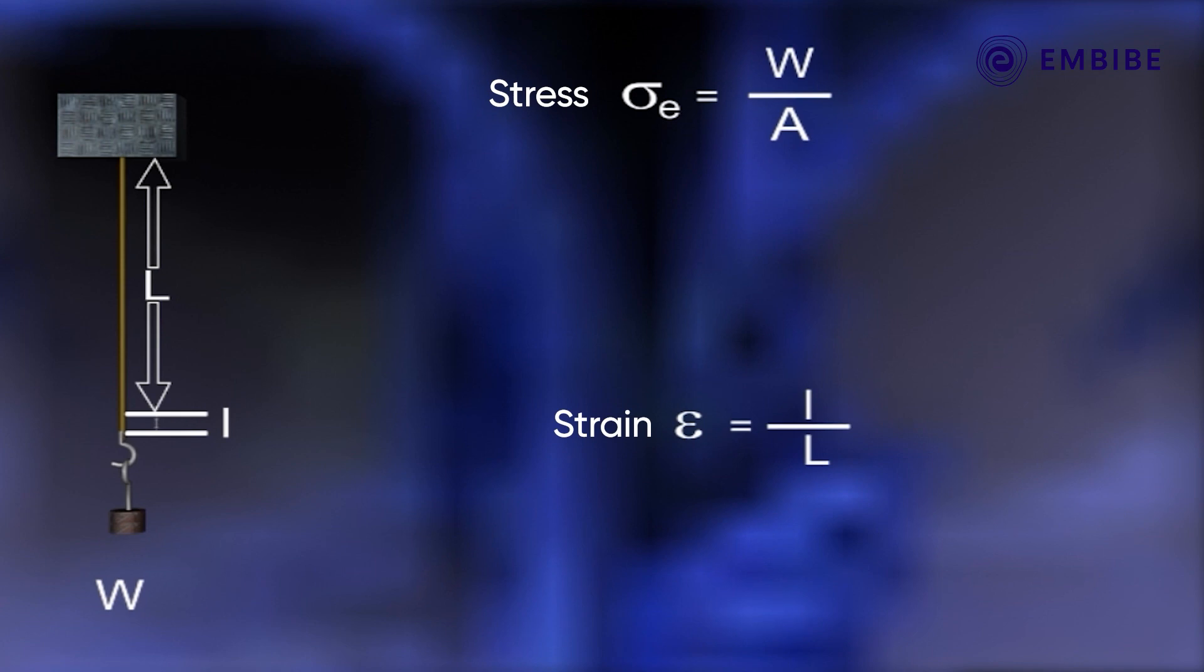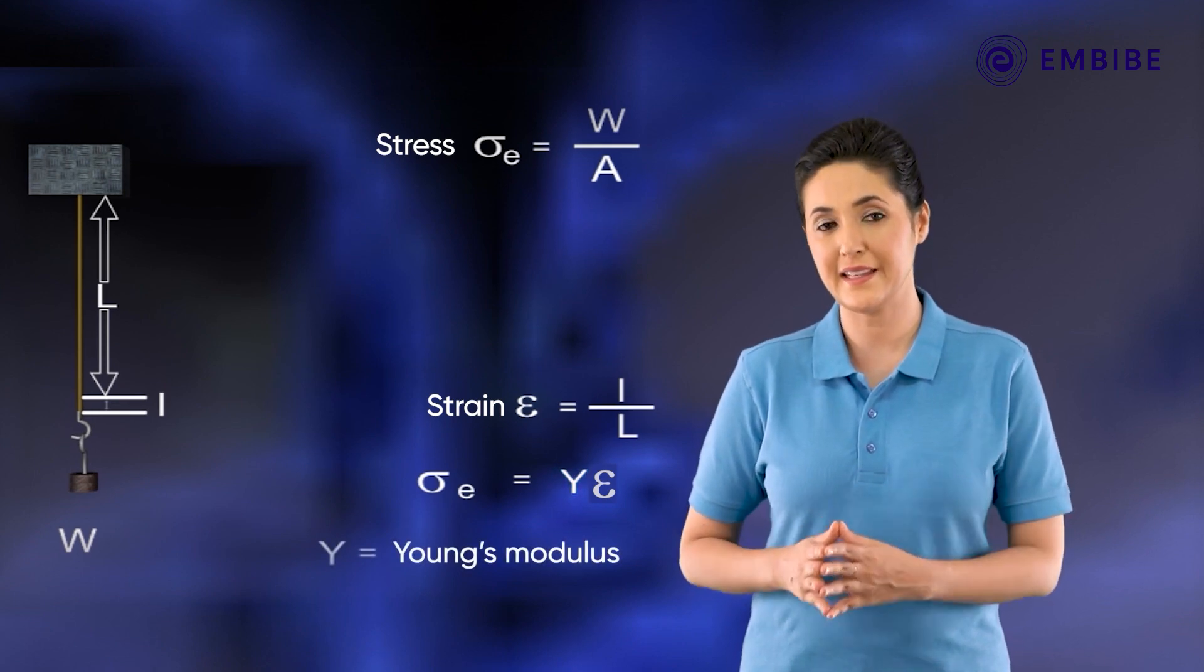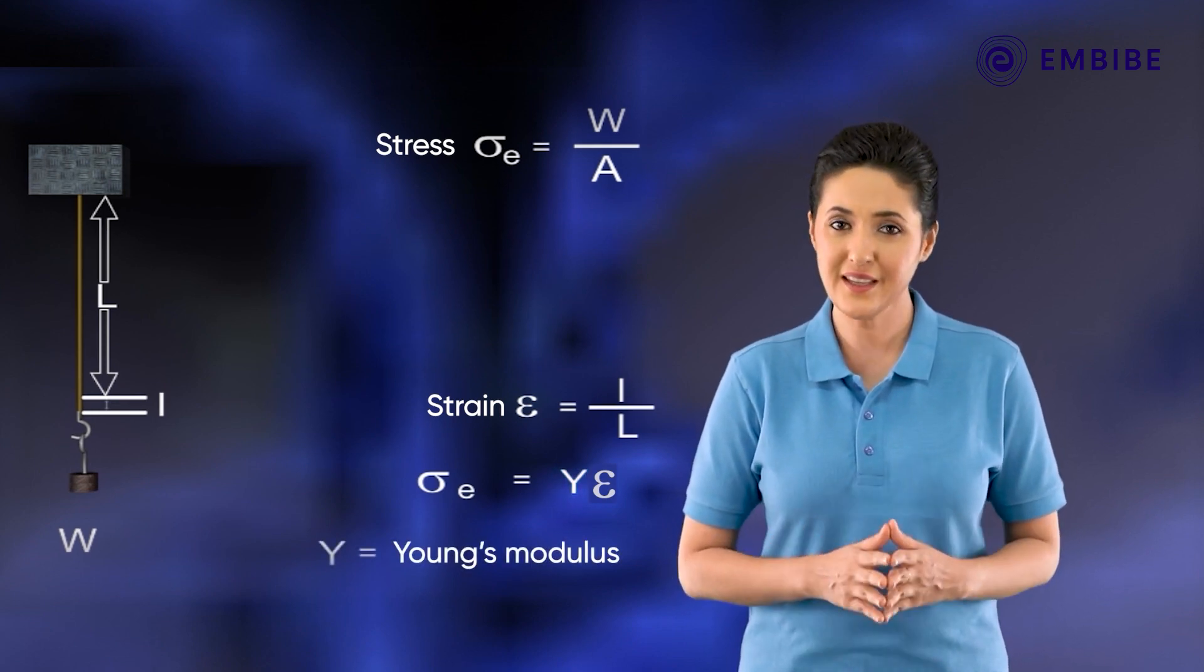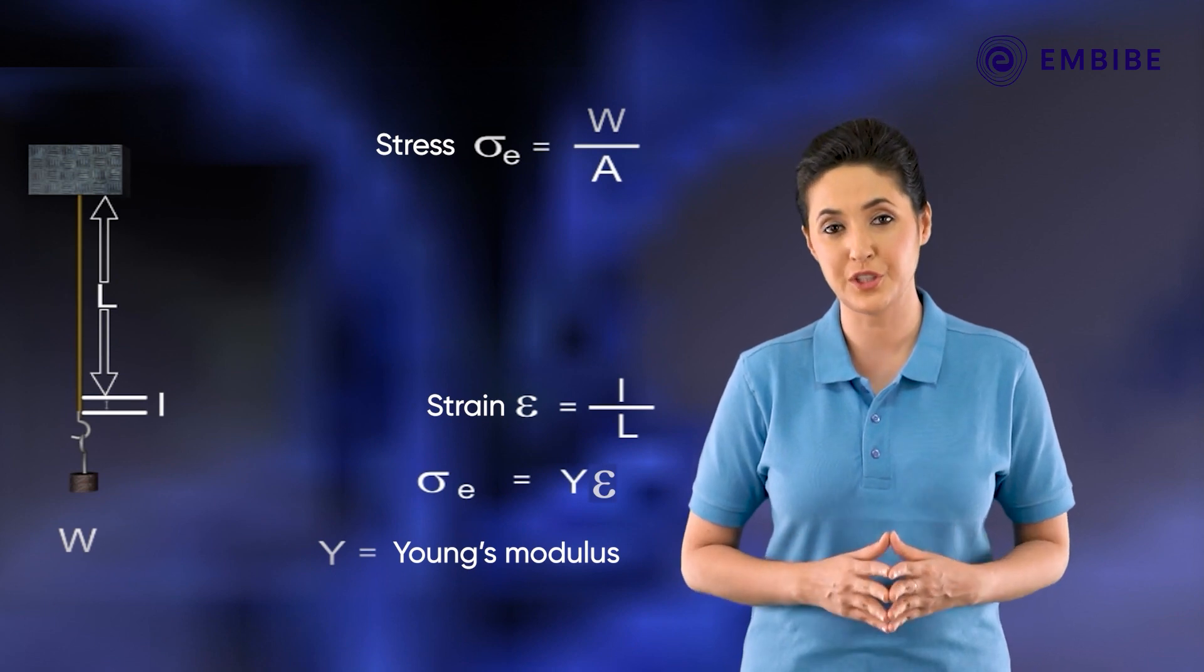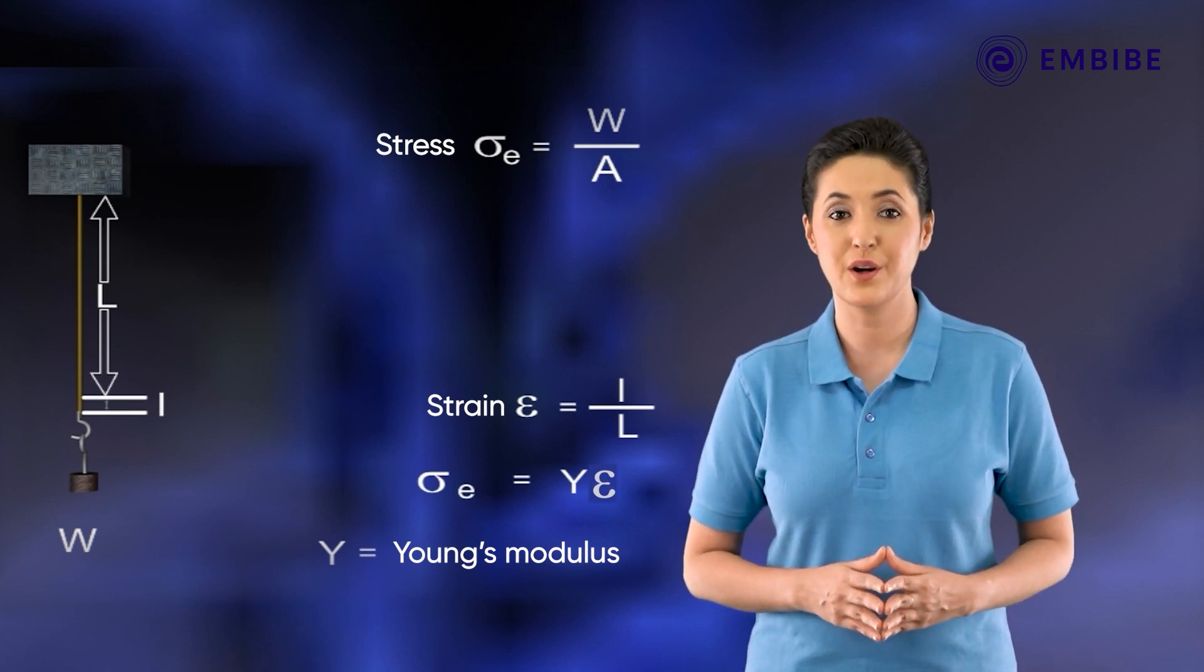Young showed that Hooke's law in terms of stress and strain can be represented as stress is directly proportional to strain. Therefore, σₑ = Yε. Here the constant of proportionality Y is known as Young's modulus of the given wire.